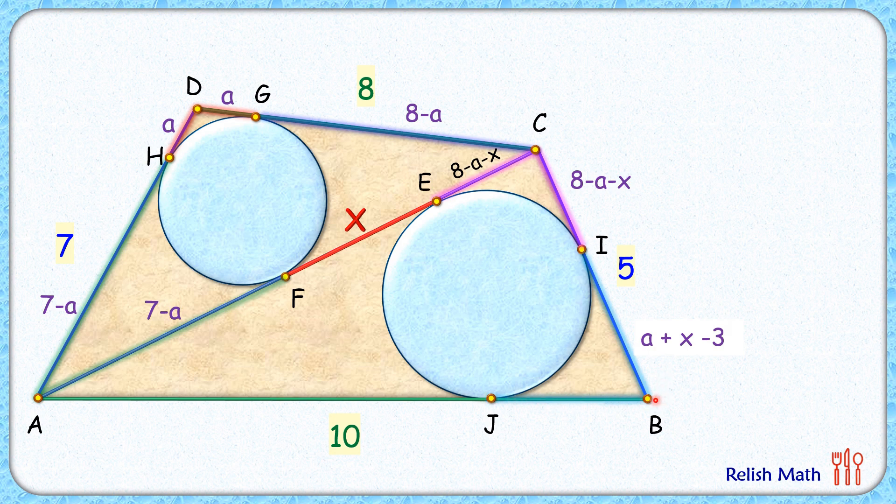Same way here, full length AB is 10 centimeters, and AJ length will be 10 minus (a plus x minus 3) centimeters. Simplifying this, we'll get this as 13 minus a minus x centimeters. Now if we look at here, this AJ length is the same as AE length because these are tangents from the external point.